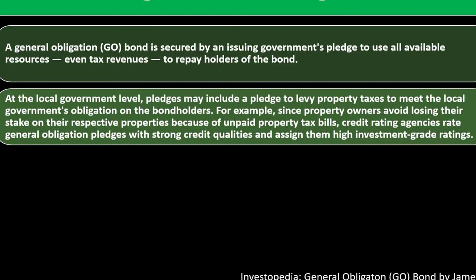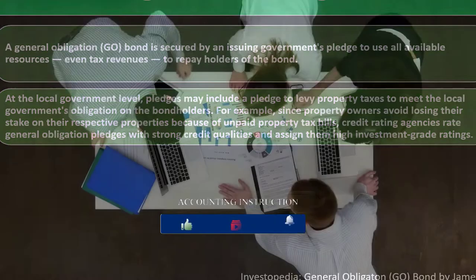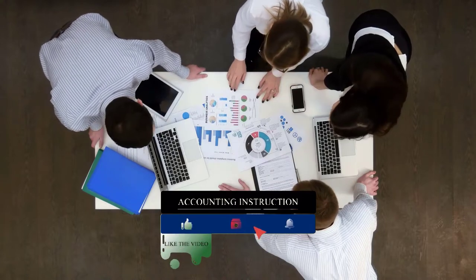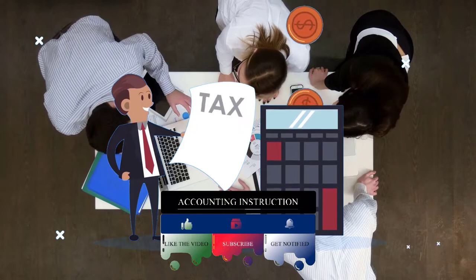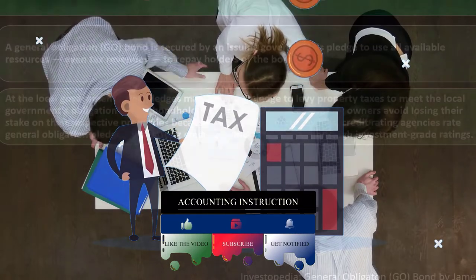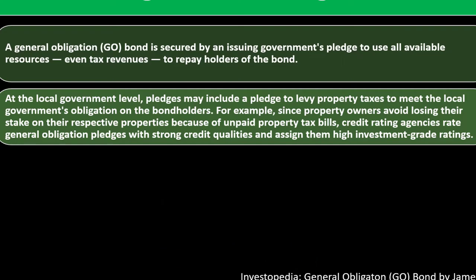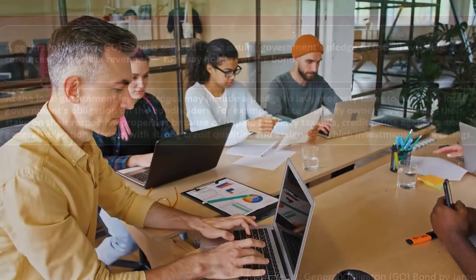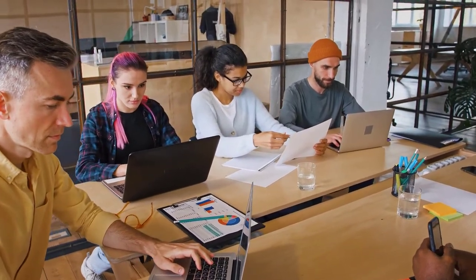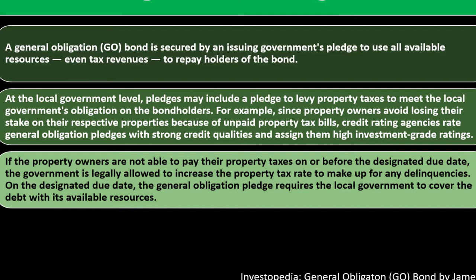At the local government level, revenue may be generated through property taxes, which could be used in part to pay back obligations. Since property owners want to avoid losing their stakes due to unpaid property taxes, credit rating agencies rate general obligation pledges with strong credit quality and assign them high investment-grade ratings. If property owners cannot pay their taxes by the designated due date, the government is legally allowed to increase the property tax rate to make up for any delinquencies. The general obligation pledge requires the local government to cover the debt with its available resources.